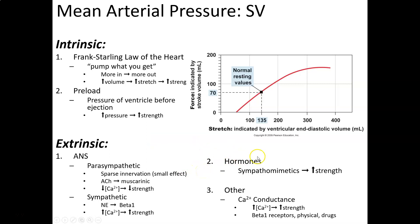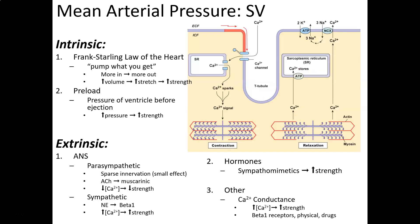For extrinsic hormonal regulation of stroke volume, we return to sympathomimetics — increasing those increases contraction strength. Under 'other' factors, the first is calcium conductance, which refers to how much calcium moves across the cell membrane. If we increase calcium conductance, we increase the amount of calcium entering the cell, which increases contraction strength because calcium interacts with receptors to allow beneficial changes during contraction.